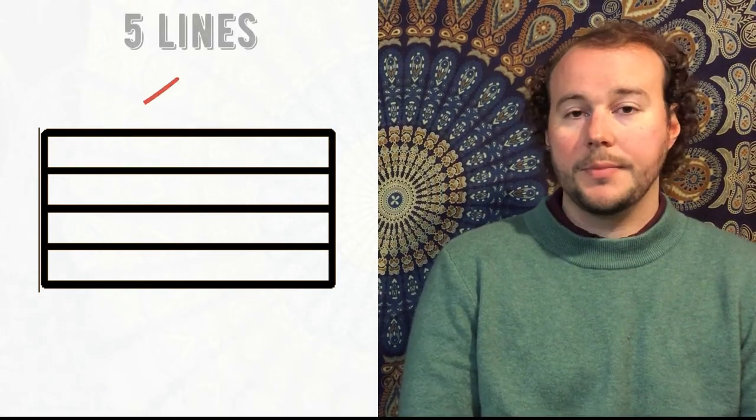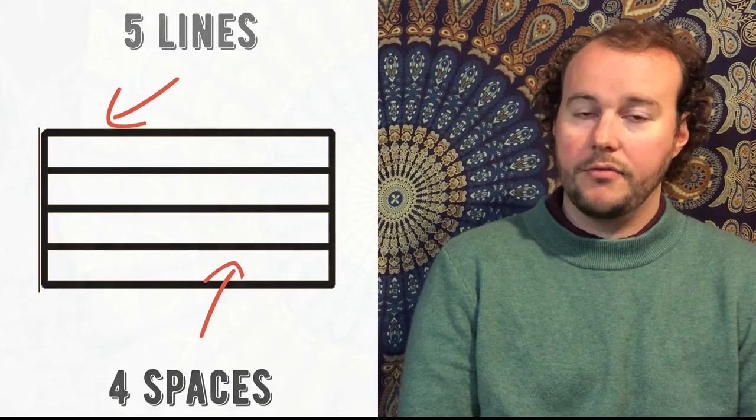So today we have a very exciting lesson because we are going to learn how to read notes on the staff. So first off, here is a staff. The staff is a very important part of reading music. The staff is made up of five lines and four spaces.